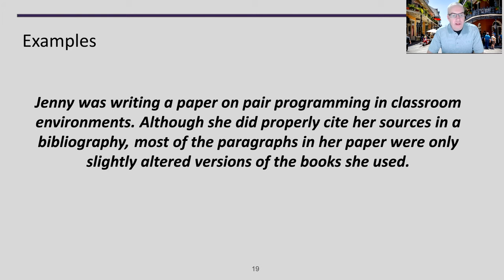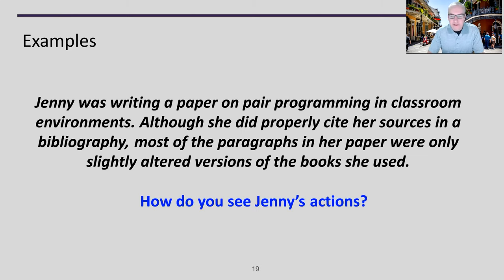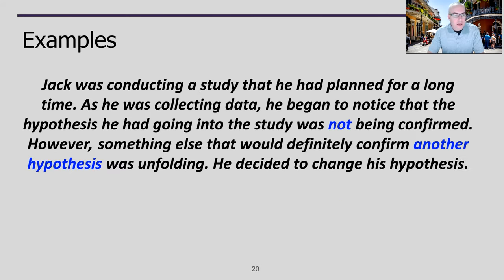Third example: Jenny was writing a paper on pair programming in classroom environments. Although she properly cited her sources in the bibliography, most paragraphs in her paper were only slightly altered versions of the books and papers she used. How do you see these actions — is this okay, and what would you do differently? Fourth example: Jack was conducting a long-planned study. As he collected data, his original hypothesis wasn't being confirmed, but something else was unfolding that would confirm a different hypothesis. So he changed his hypothesis mid-study. Was this right? Why or why not, and how would you handle it differently?